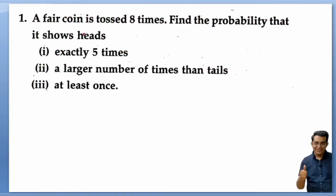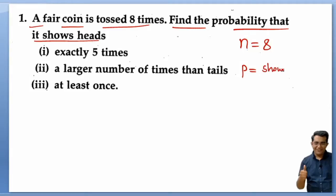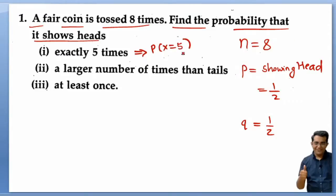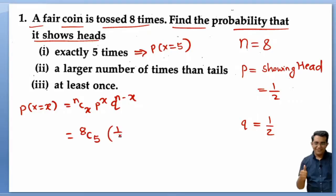The next question is a basic conceptual question. A fair coin is tossed 8 times, so number of attempts N = 8. Find the probability that it shows head at least 5 times. Success is defined as showing head. For the first condition, P(X=5): using the formula P(X=x) = 8C5 × (1/2)^5 × (1/2)^3.